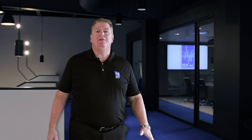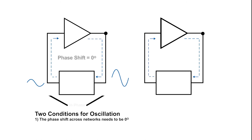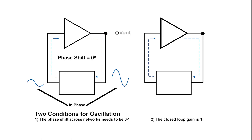The gain in the feedback loop needs to be controlled to unity gain. Otherwise, the signal will be clipped and distorted. In the illustration shown, we see a simplified oscillator circuit that consists of an amplification stage, a feedback network, and a filter that decides what the feedback loop gain should be.